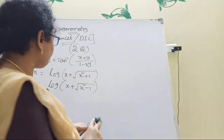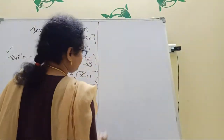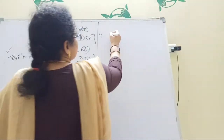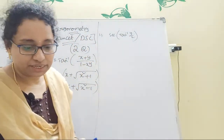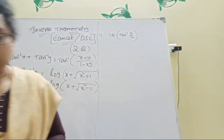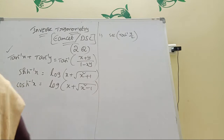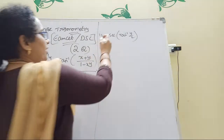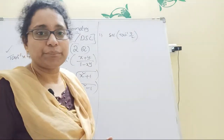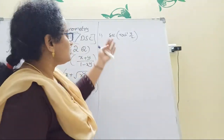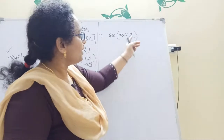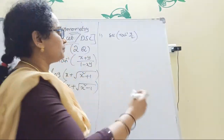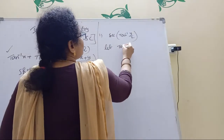Let's look at the first question: find sec(tan⁻¹(y/2)). Here are the options. This should be solvable within one minute — 30 seconds is enough. The approach: since there is already a variable y, convert the inner expression by letting x = tan⁻¹(y/2).